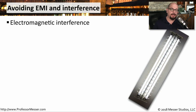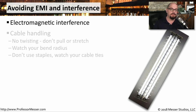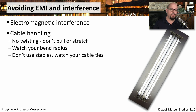EMI is electromagnetic interference. Our cables are not indestructible, and we want to be sure we're handling them properly and running them along areas where the EMI will be minimized. If you are running some new cables, you want to be sure not to twist them during installation and minimize the amount of pulling or stretching. You also want to be sure that you don't have any sharp bends — each cable will document the maximum bend radius allowed, and you don't want to exceed that. You also don't want to use staples or any type of cable ties that might crimp the wires inside of those cables.